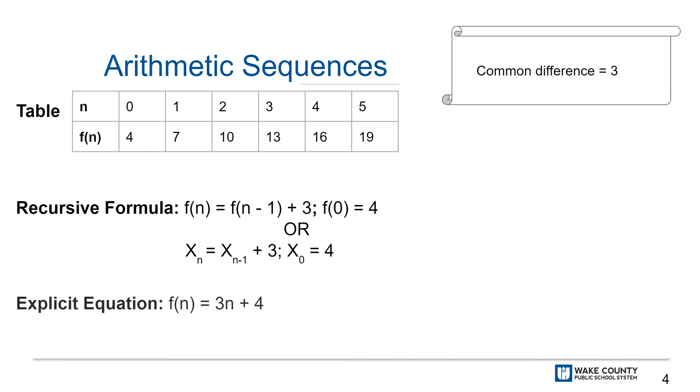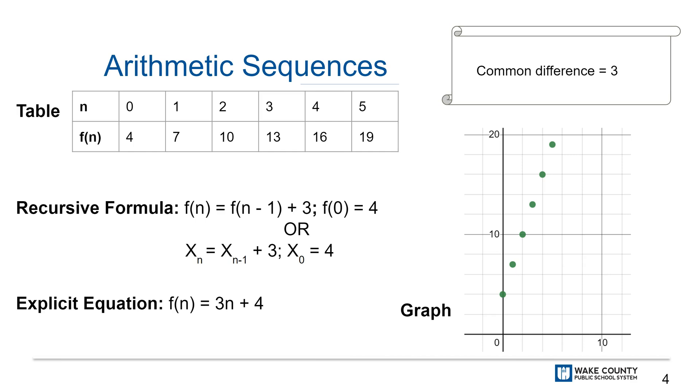An explicit equation would look like f(n) = 3n + 4. And a graph of this sequence would look like what you see here in the lower right of your screen.